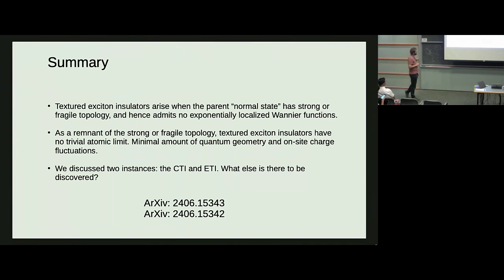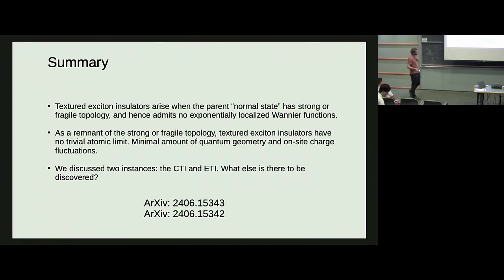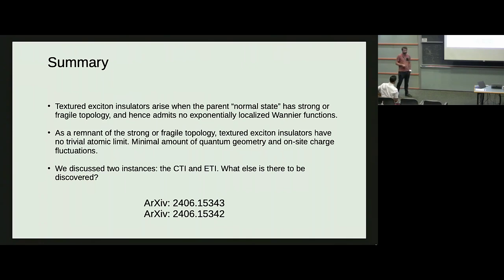To summarize: textured exciton insulators arise generically when the underlying symmetric bands have non-trivial strong or fragile topology. As the U(1) valley symmetry is broken, there is a remnant of this topology in the symmetry-broken state—implying no atomic limit, an obstruction to delta-function localization, a minimal amount of quantum geometry, and lower bounds on on-site charge fluctuations. I discussed two examples—the CTI and ETI—and an obvious question is whether this is part of a more general theory. Our first paper develops the general theory, and the second paper presents simulations on many Moiré materials, finding CTIs, TVPs, and ETIs in realistic Hamiltonians.